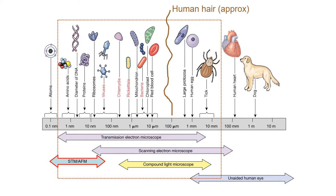Recall that this course covers quite the scale of stuff, and most of the things we're talking about are things that we cannot see with the naked eye. So we need to use a compound light microscope, perhaps like we use in the lab, or maybe a scanning or transmission electron microscope. We'll also touch very briefly on scanning transmission microscopes and atomic force microscopes — they're not that important for this course but they're just too cool to ignore.